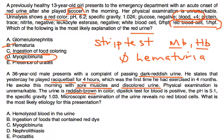Dipstick test for blood is positive. pH is 5.1, specific gravity is 1.03. Microscopic exam of the urine reveals no red blood cells. What is the most likely etiology for this presentation?